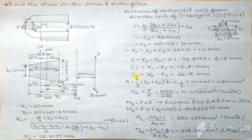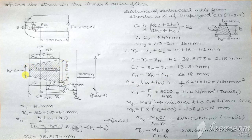Ci is Rn minus Ri from the figure, and C0 is R0 minus Rn. To find the area of the trapezium, always remember: area = half × sum of parallel sides × perpendicular distance between them. The parallel sides here are 18 mm and 6 mm, and the distance between them is 40. So area = 0.5 × 24 × 40 = 480 mm².